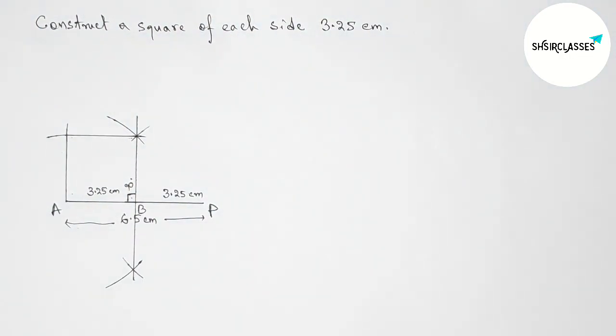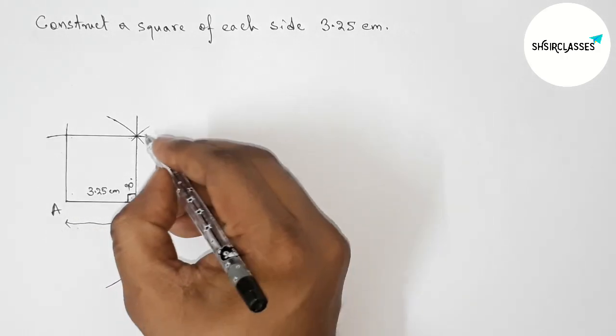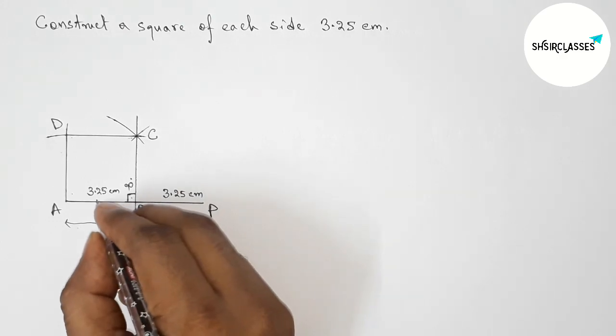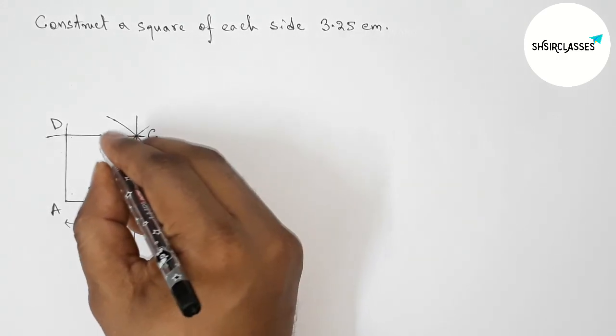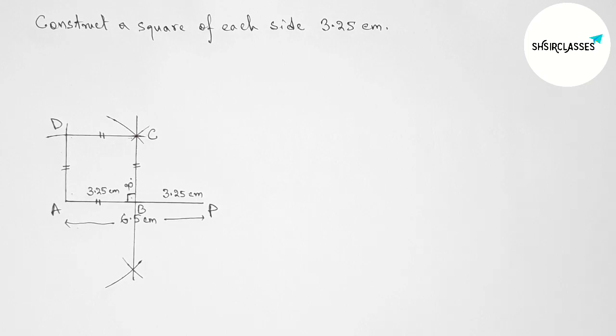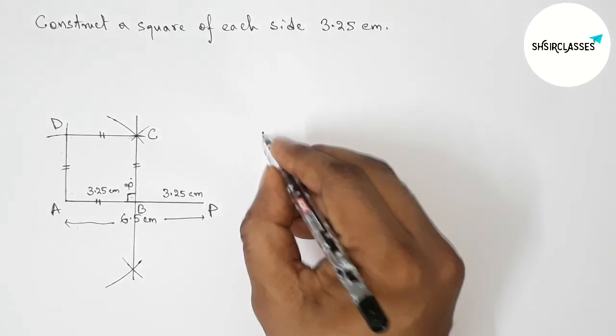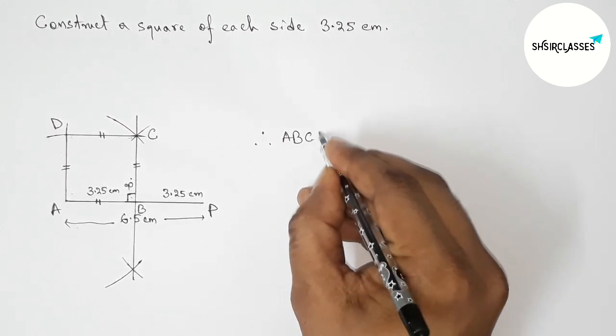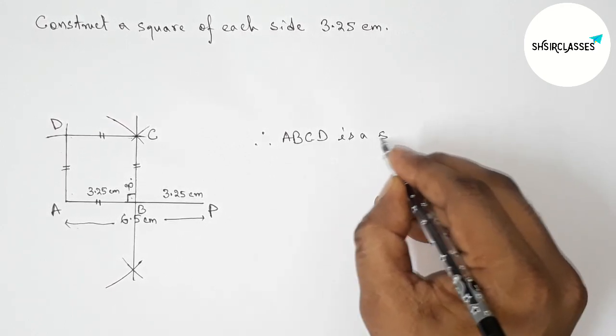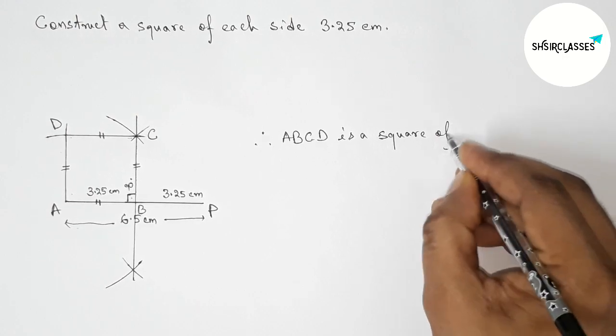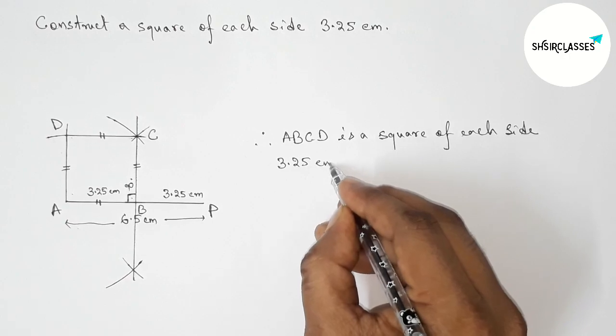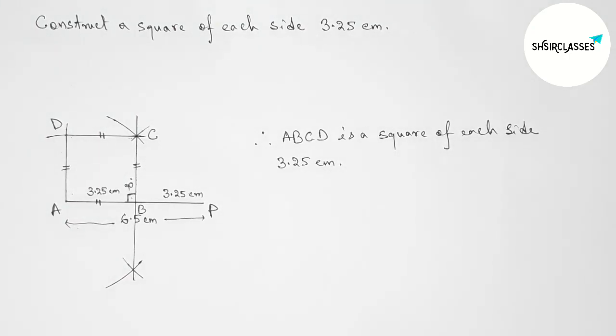So here we have A, B, C, and D. We know that all the sides of a square are equal, so therefore ABCD is a square of each side 3.25 centimeters. So by this way you can construct this square.